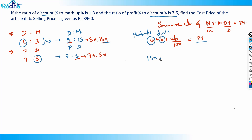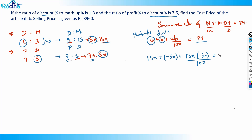The discount percentage is negative since it represents a decrease, so b = -5x. Substituting into the formula: 15x + (-5x) + (15x × (-5x))/100 = 7x. This gives us 10x - 75x²/100 = 7x. This is our equation to find the value of x.